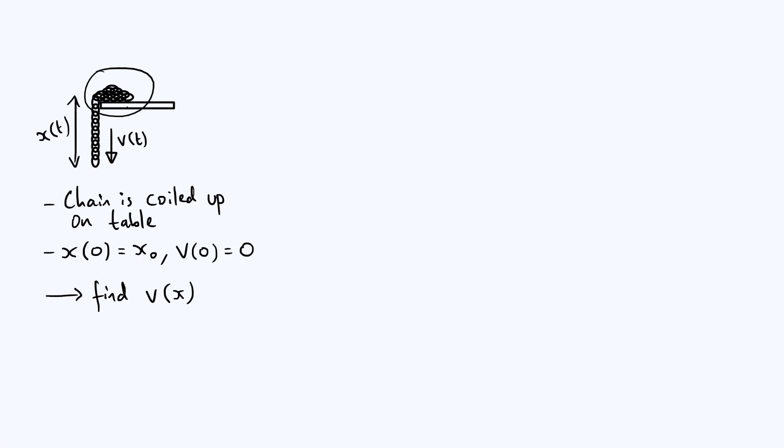We have part of the chain hanging down vertically off the edge of the table, and I've defined the length of chain that's hanging down to be x, and x can vary with time. As soon as we let go of the chain, it's going to start falling down and x is going to be increasing with time. I've also defined the downwards velocity of the chain to be v, which again can depend on time.